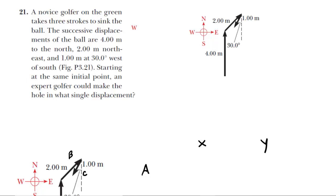This question is essentially asking us to determine the displacement of this golf ball. Whenever you're calculating a displacement, what you're really trying to figure out is the length and direction of a vector from the starting point, which is right here, to the ending point, which is right up there. So our goal becomes to find the length of this red vector right here as well as the direction.